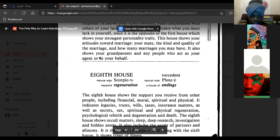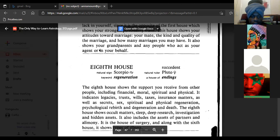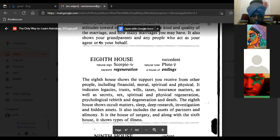Eighth house, natural sign Scorpio, keyword regeneration, succedent, natural ruler Pluto, a house of endings. The eighth house shows the support you receive from other people including financial, moral, spiritual, and physical. It indicates legacies, trusts, wills, taxes, insurance matters, as well as secrets, sex, spiritual and physical regeneration, psychological rebirth and degeneration, and death. The eighth house shows occult matters, sleep, deep research, investigation, and hidden assets. It also includes the assets of partners and alimony.